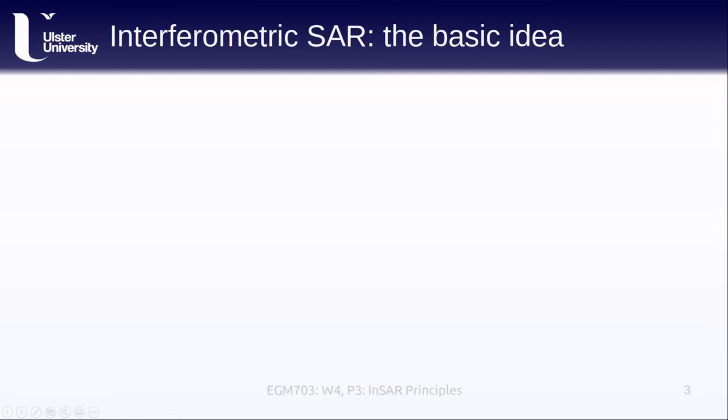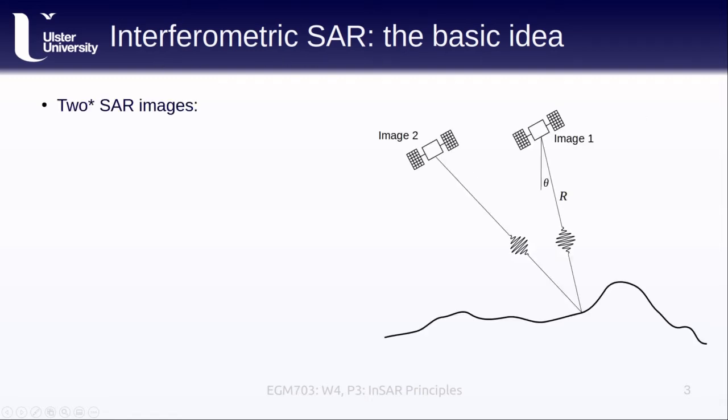That additional processing is known as interferometric SAR or InSAR. The basic idea here is that we have two images, image 1 and image 2, that are separated either by a baseline distance B or separated by time. Then the phase of the first image is the combination of the deterministic component determined by the range and the random component contributed by each of the subpixel scatterers.